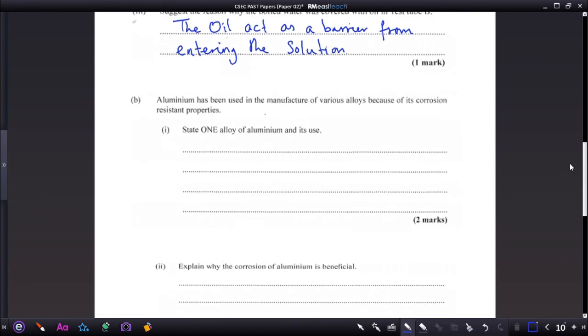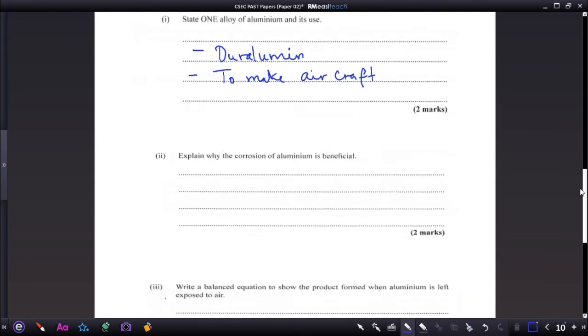Let's just look at part B now. Aluminum has been used in the manufacture of various alloys because of its corrosion resistant properties. State one alloy of aluminum and its use. One alloy of aluminum is Duralumin. And it's used to make aircraft.